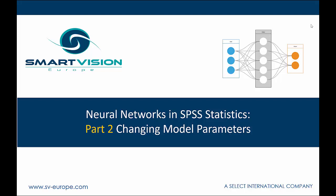In part two of working with neural networks and SPSS Statistics, we're going to focus on changing some of the model parameters and seeing what effect that has upon the model outputs and the accuracy.